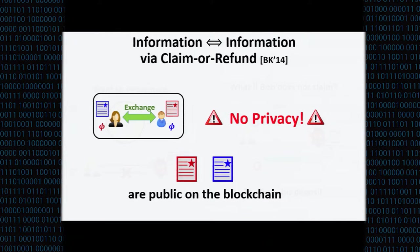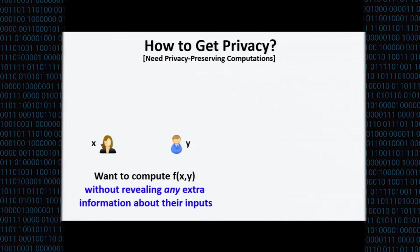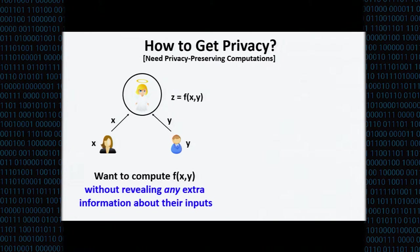The problem with this protocol is privacy: everything revealed in the claim-or-refund protocol is visible to everyone in the system. To add privacy, we bring in secure computation. We model privacy with an ideal angel that takes Alice's input x and Bob's input y, computes whatever function they want, and tells them the answer without revealing anything more about the inputs. However, this ideal is also impossible — Cleve proved you can never realize this in the real world.